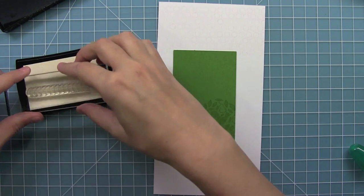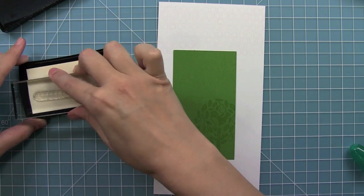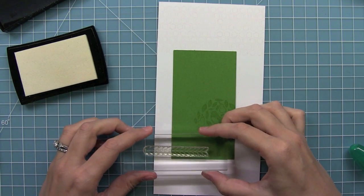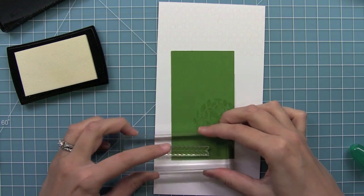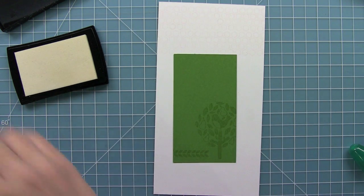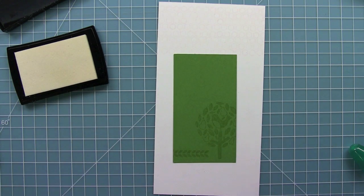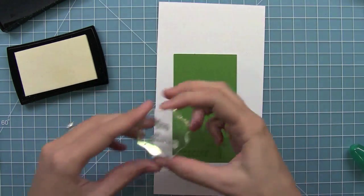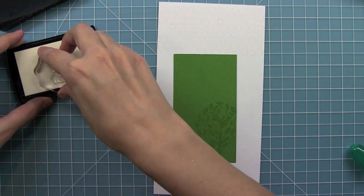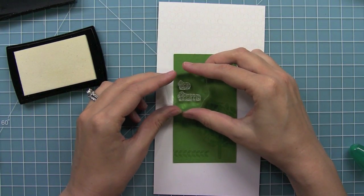Then we're going to go ahead and stamp this cute little leafy pattern to add a little something on this side. And then we've got our to and from. Perfect for a tag. We're going to heat emboss that right up here.